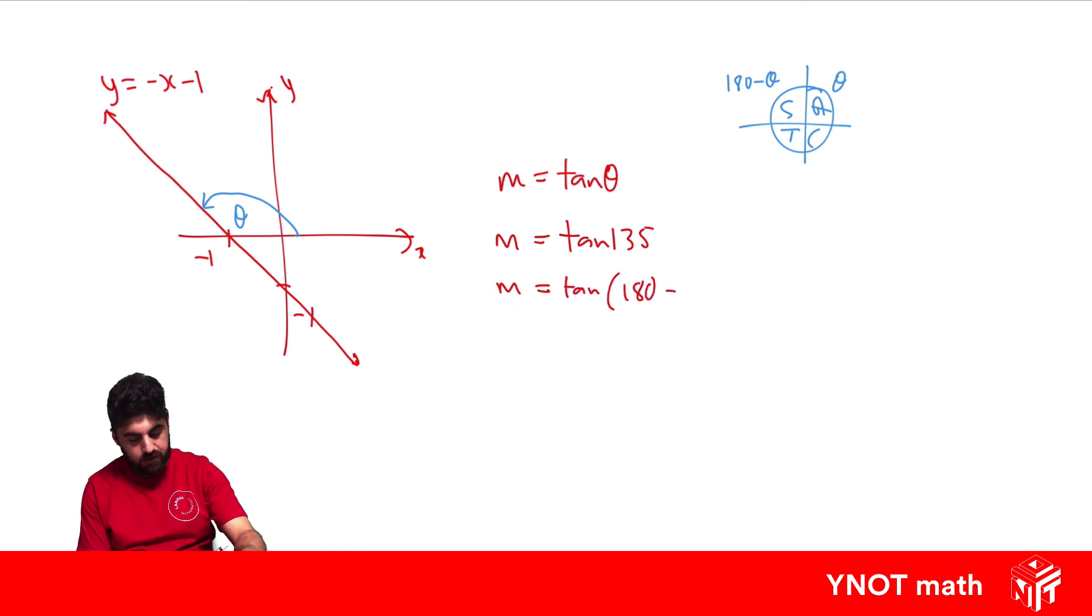...180 minus 45, which lies in our second quadrant—that's why we used 180 minus 45. Tan is negative there, so we get -tan 45. Simplifying this with trig, tan 45 is 1, so we get the gradient is -1 as expected, because our coefficient of x is -1.